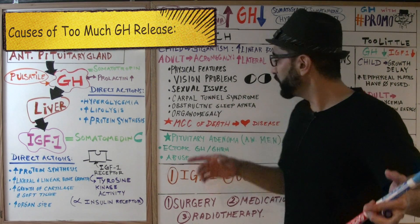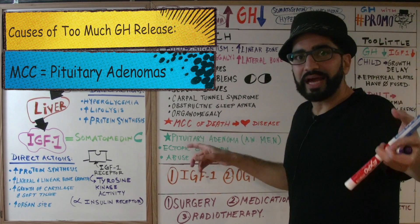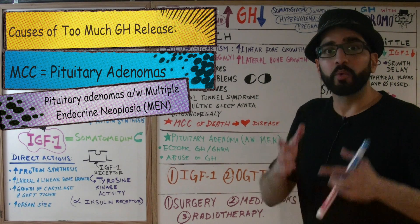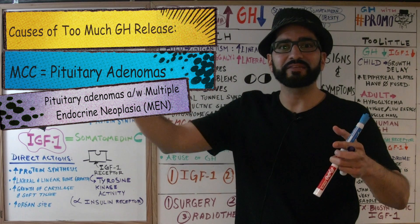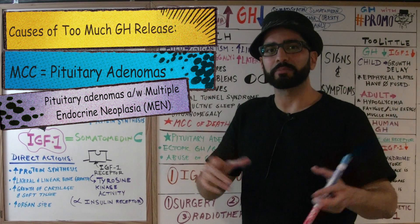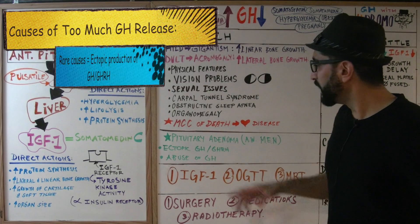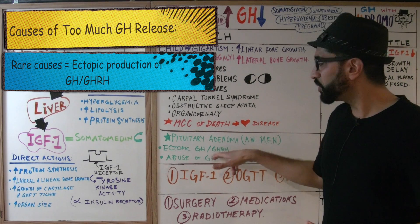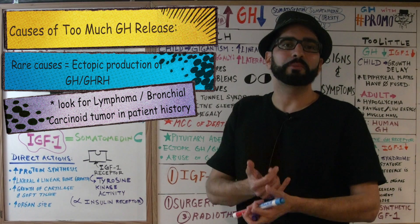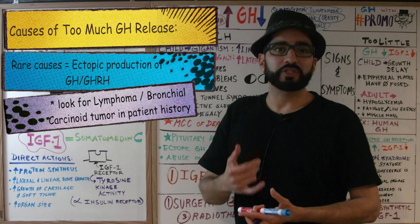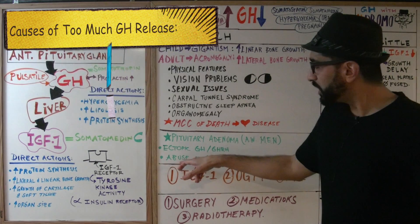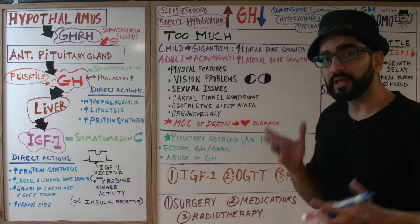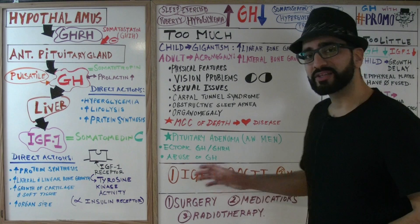The most common cause of excess growth hormone is a pituitary adenoma, which is associated with multiple endocrine neoplasia (MEN) syndromes — to be discussed in a later lecture. Rare causes include ectopic secretion of growth hormone or GHRH — look for a lymphoma or bronchial carcinoid tumor in the patient's history. Abuse of growth hormone is another rare cause.